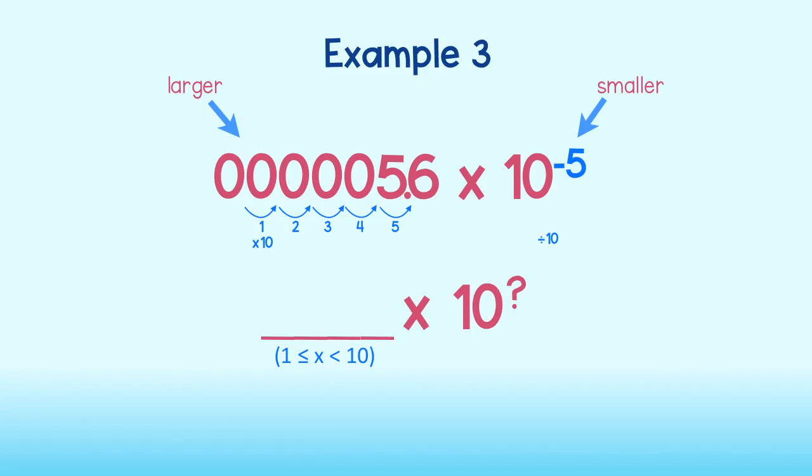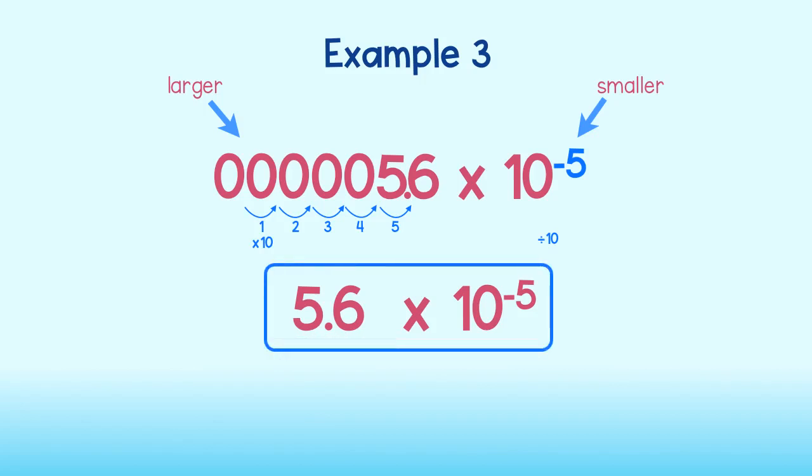I have moved the decimal far enough so that my first factor is now 5.6, which is greater than or equal to 1, but less than 10. In doing so, I am left with 10 to the negative fifth power. 0.000056 written in scientific notation is 5.6 times 10 to the negative fifth power.